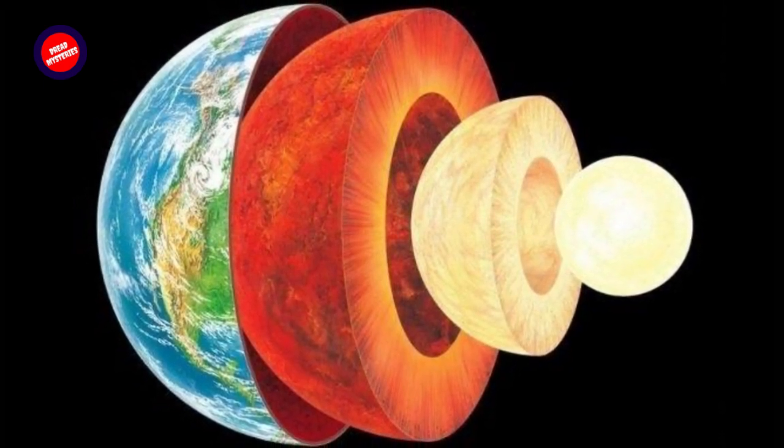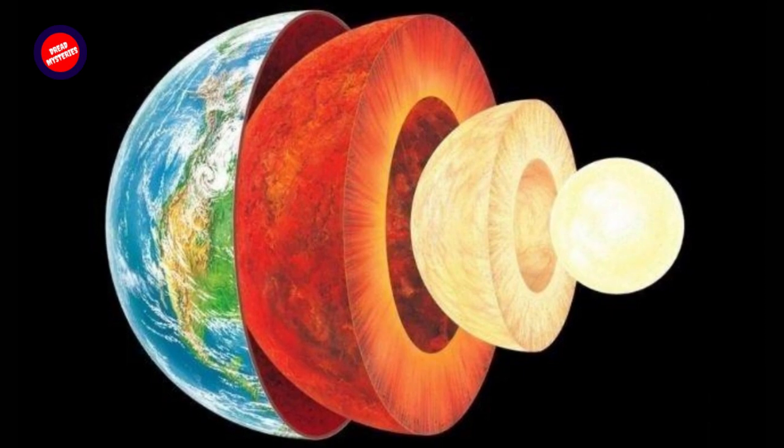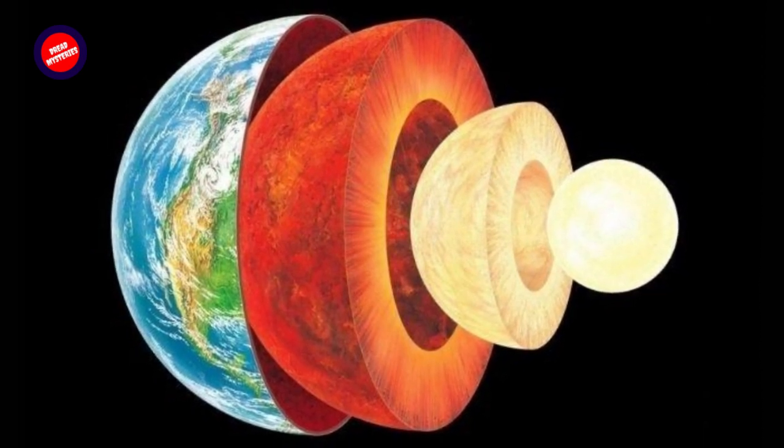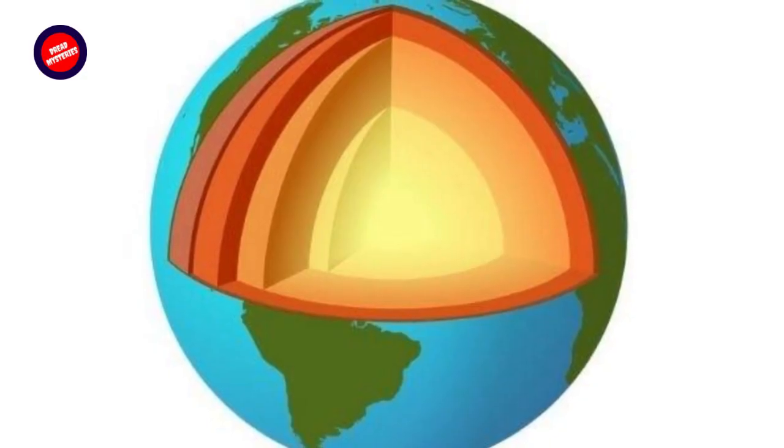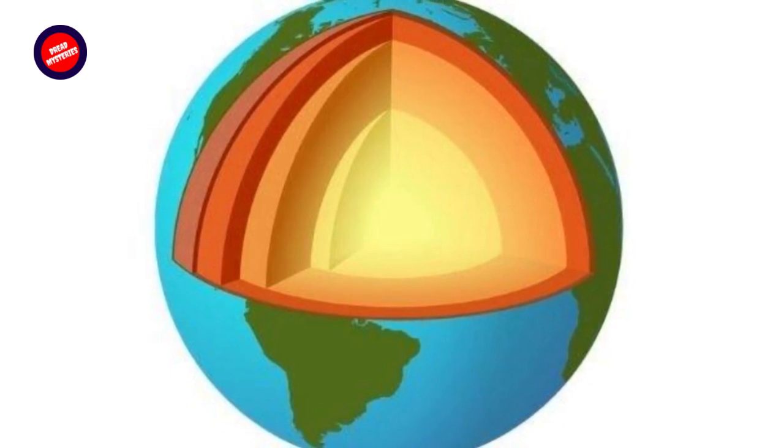Rhett Butler and his partner double-checked it several times and got the same result each time. This indicates that the iron in the Earth's inner core can be found in solid, liquid, as well as soft forms.